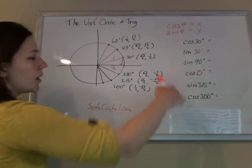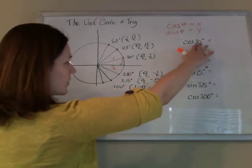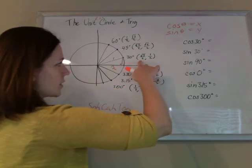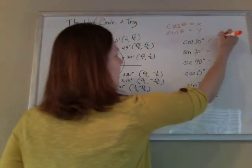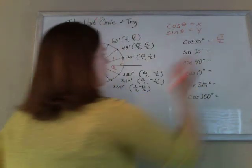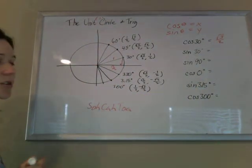So if I'm trying to find the cosine of 30 degrees, I just look there and I have √3/2. And I can do this for any angle.